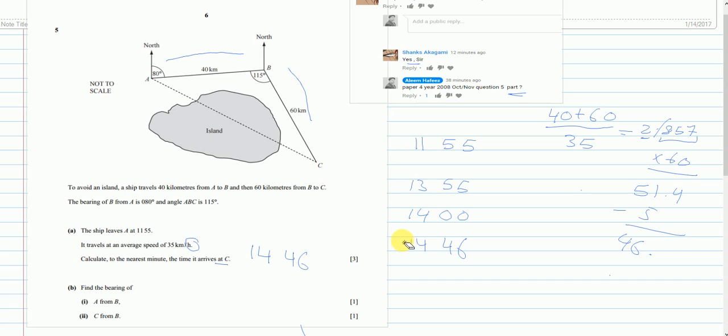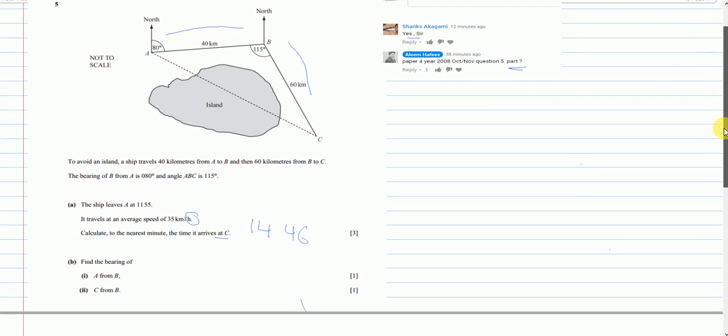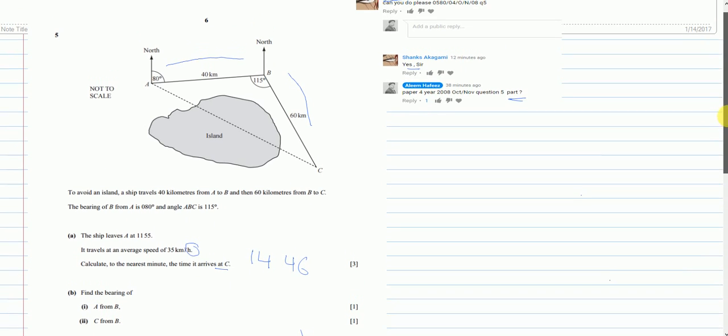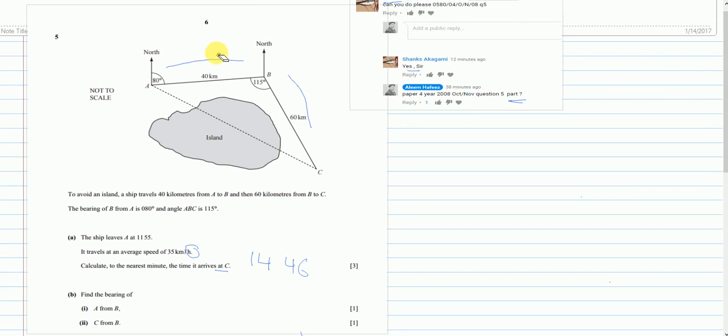Now for part B, because there is no space to answer in the older versions of the paper, I think you guys used to get the answer sheet separately. For part B, find the bearing of A from B. So we have to start from B and end up at the line which is going towards A. So I will start from here. The bearing means always we will start from the north of the B and we have to end up here at A. So I am looking for this whole angle.